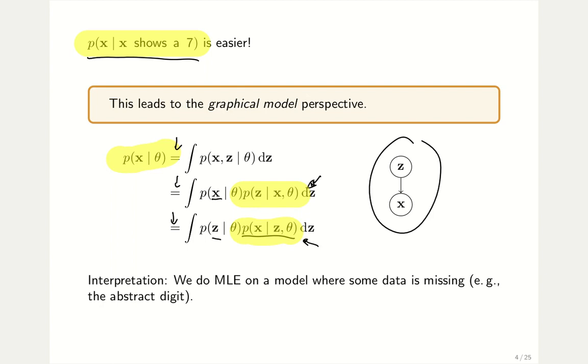But that's ultimately our goal. But our working horse will be the other direction. And that's what the graphical model tells you. The way to interpret this is that we're still doing maximum likelihood estimation. It's just that we have a model where some data is missing, for example, the abstract digit is missing. That's what we'll assume for the next few slides. But I already told you this is a model assumption. You can easily see different latent factors in this MNIST dataset, such as the position on the canvas, the rotation, the skewness, and so on. So it's a simplified model, but it will turn out to be fairly powerful.